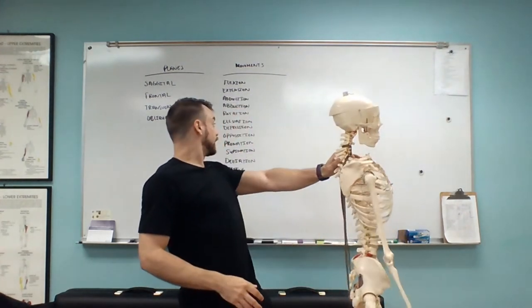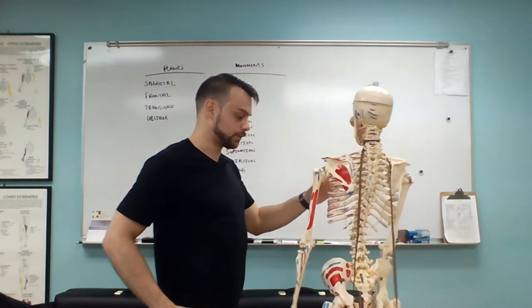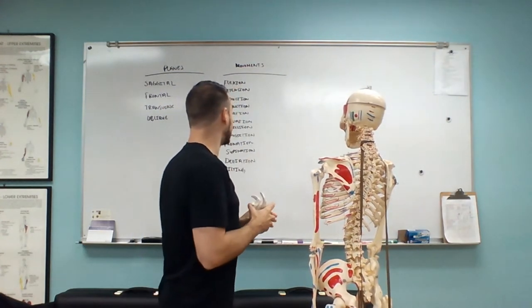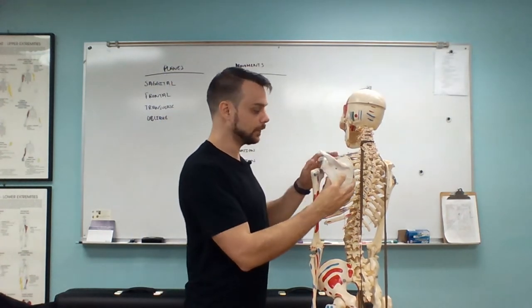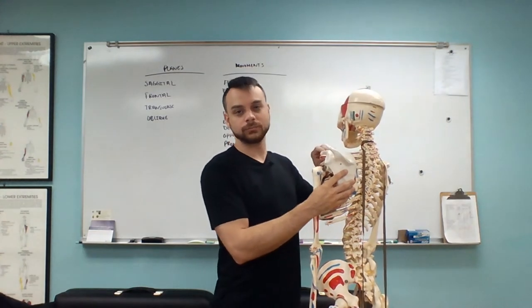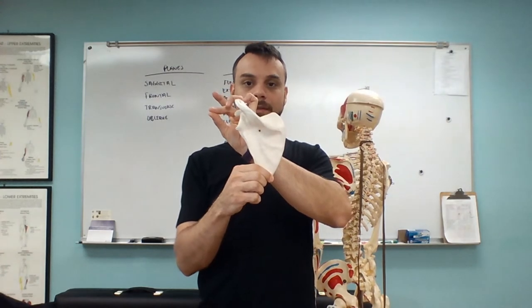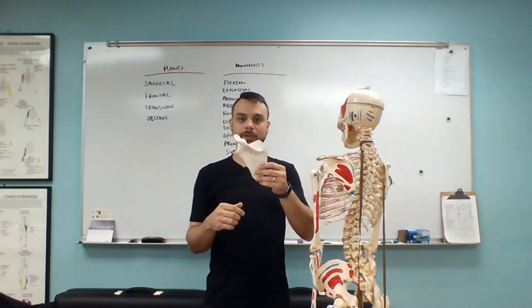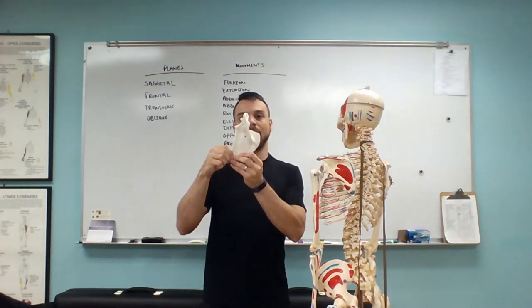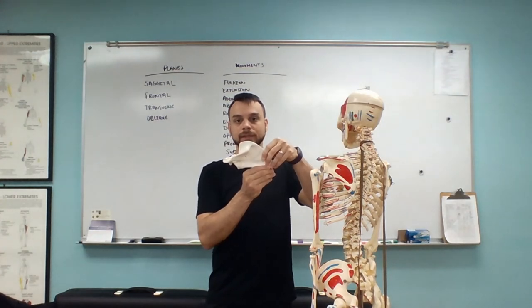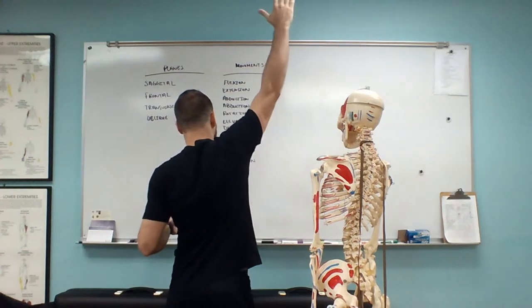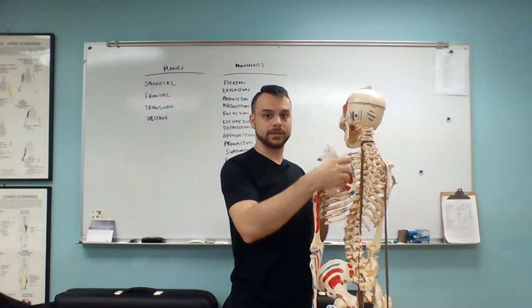Now we're going to look at the shoulder blade itself — the shoulder complex. The first movement is rotation, but this is a little different from internal/external rotation because we're rotating upward or downward. If you look at the scapula, it's almost like a little triangle with a finite point, and the orientation of rotation is determined by which way the point is going. If we're turning it up, that's upward rotation; if we're turning it down, that's downward rotation.